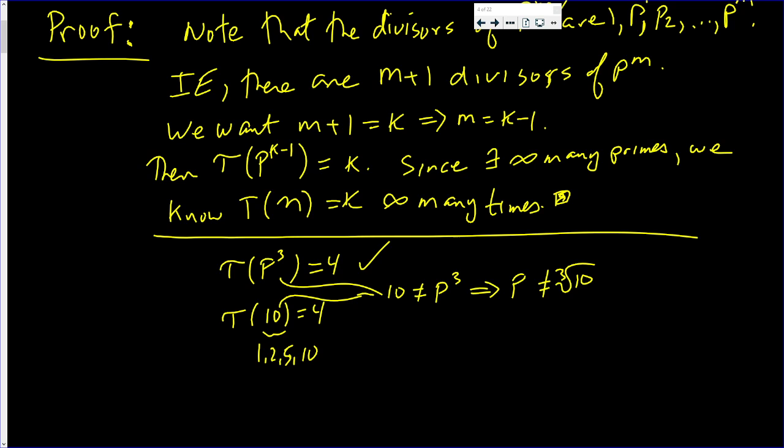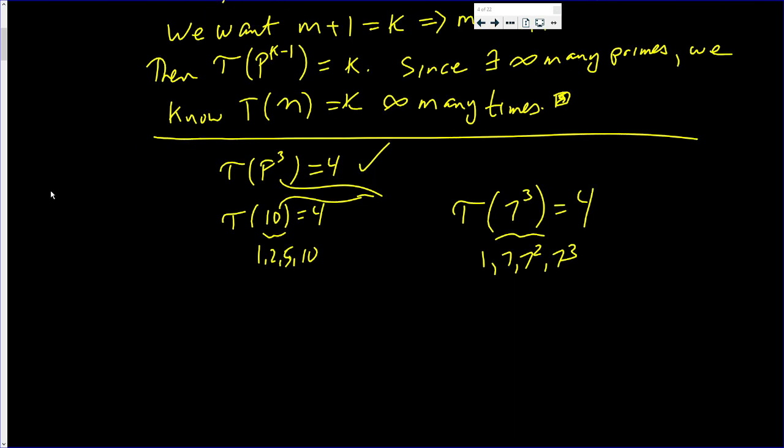What I'm getting at is, yes, I guarantee you, if you take tau of 7 cube, you will get 4. Because the divisors are 1, 7, 7 squared, and 7 cube. And if you take tau of 13 cube, you will get 4.